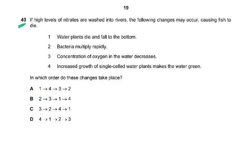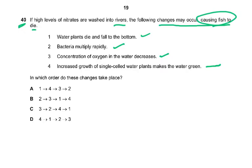Question 40: if high levels of nitrates are washed into rivers, the following changes may occur, causing fish to die — this is called eutrophication. First, there is increased growth of algae or single-celled water plants, making the water green. Then water plants die and fall to the bottom. Then bacteria multiply rapidly — from 10 million they may become hundreds of millions. They respire aerobically and use up the oxygen in the water, causing fish to die. The concentration of oxygen in the water decreases because the bacteria use it up.